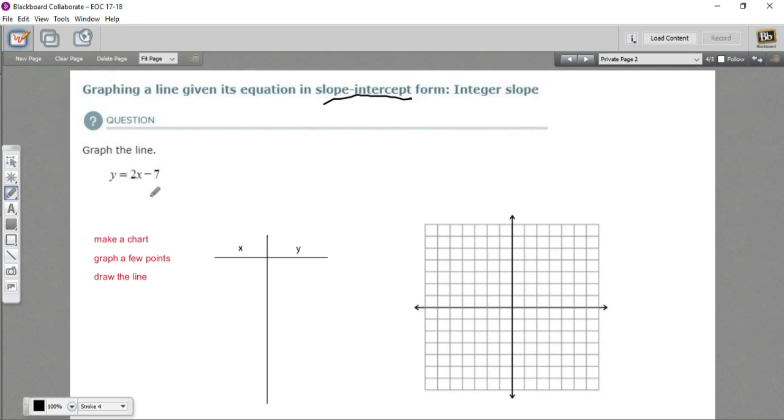If we were to do that here, let's say I put in 2 for x. It would be 2 times 2, that would be 4, and then 4 minus 7 would be negative 3. And let's put in another value here, let's put in 4. So 2 times 4 is 8 minus 7 is a positive 1.